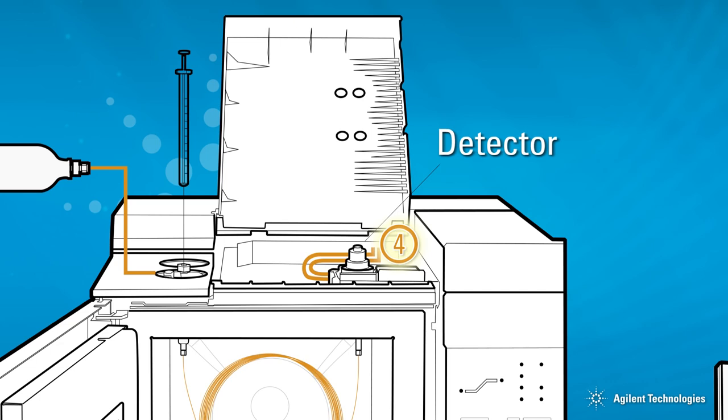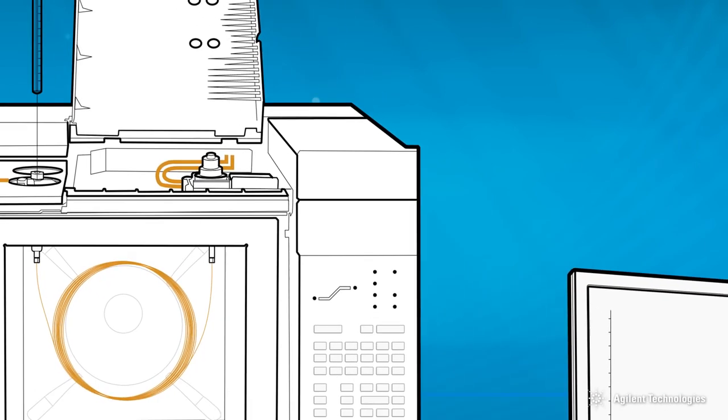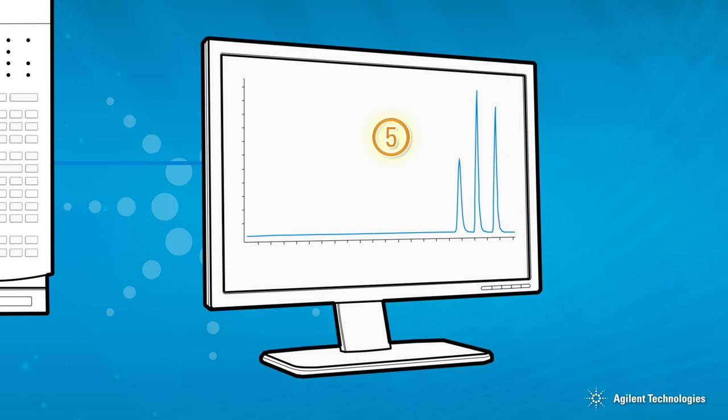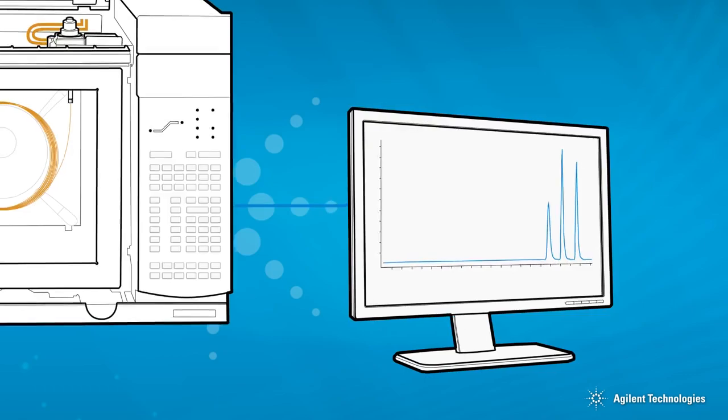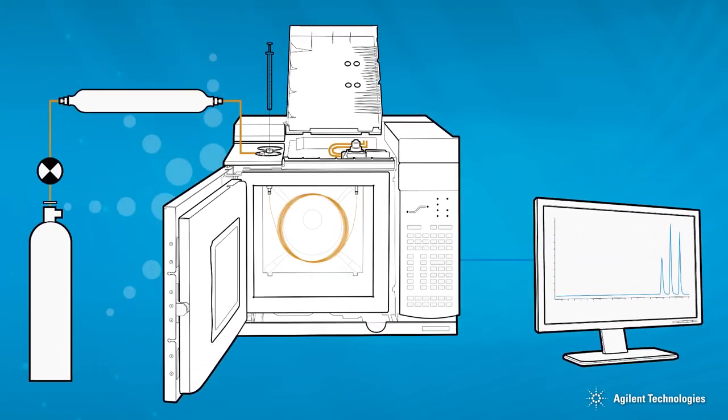Detector: After the sample is separated, it exits the column into one of many different types of detector, where the amount of sample present in the original sample mixture is measured. A computer chem station or integrator is used to measure the amount of sample components as they pass through the detector, and also to identify those components based on retention time.